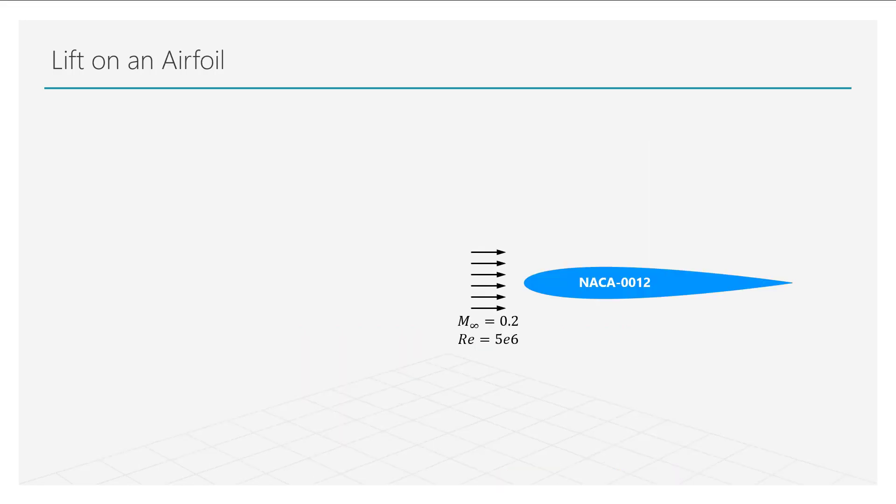Let us look at an example. Here we have an airfoil designated as NACA 0012. Simulations were run at a Mach number of 0.2 and a Reynolds number of approximately 5 million, which can be safely set to be in the incompressible regime.